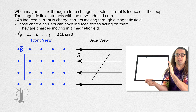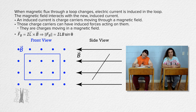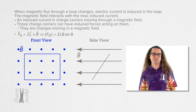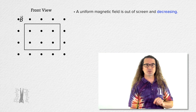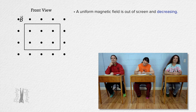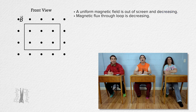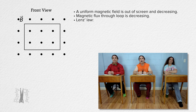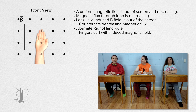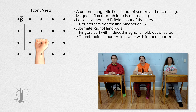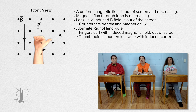Every direction I'm about to mention is in the perspective of the front view. The uniform magnetic field which is out of the screen is decreasing in magnitude. Billy, what does that mean for the direction of the induced current in the rectangular loop? A uniform magnetic field is out of the screen and decreasing, so the magnetic flux through the loop is decreasing. Lenz's law tells us the induced magnetic field opposes that change, so the induced magnetic field inside the loop is out of the screen. Using the right-hand rule, fingers curl with the induced magnetic field inside the loop, which is out of the screen, and the thumb points counterclockwise — so the induced current in the loop is counterclockwise from the front view perspective.